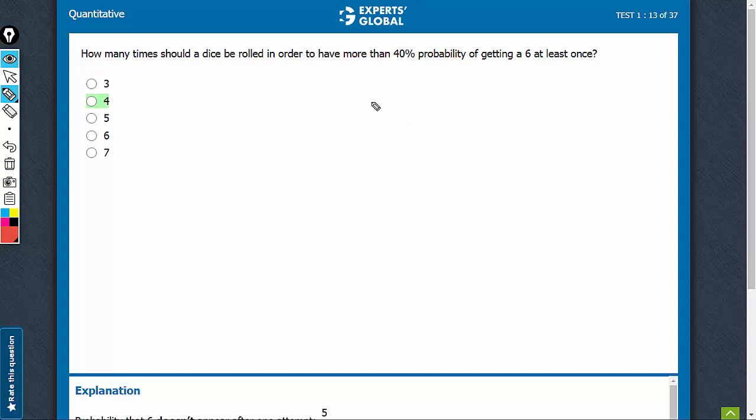The probability of getting a 6 and the probability of not getting a 6. In one attempt, this would be 1 by 6. This would be 5 by 6.